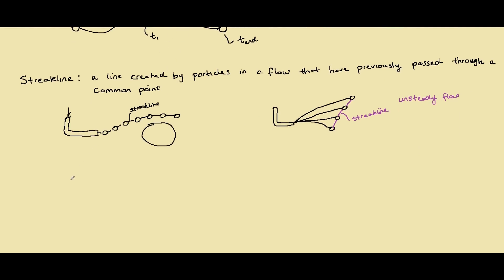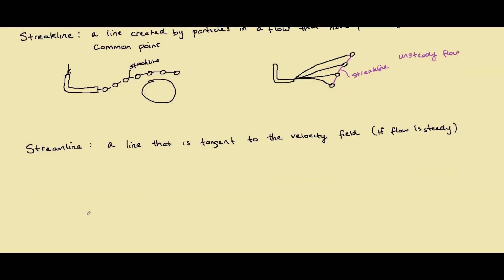Next we have a streamline. The definition of a streamline is a line that is tangent everywhere to the velocity field. This only occurs if the flow is steady — for unsteady flows, the streamline may change shape with time. So let's say we have a particle that moves like this; the velocity field at each point is tangent to the movement. A streamline is basically a line that joins all these velocity fields at the instantaneous points.